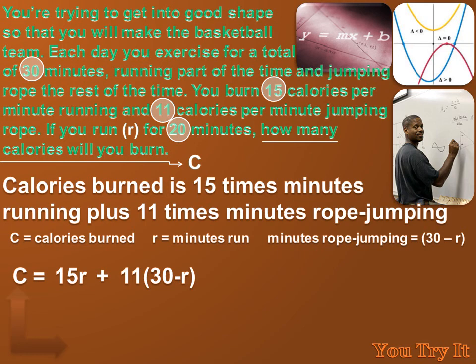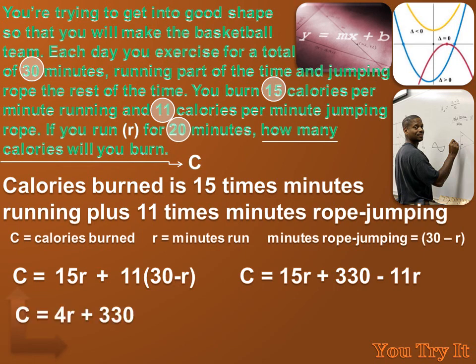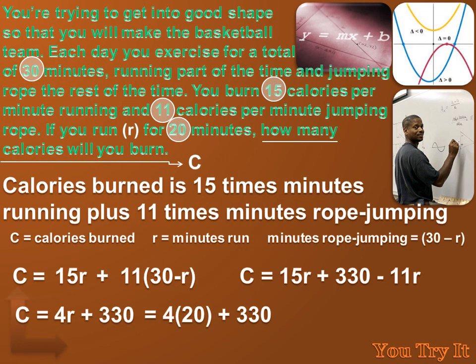We can simplify that expression. C equals 15R plus 11 times 30 minus R. Using the distributive property on 11 times 30 minus R, it becomes C equals 15R plus 330 minus 11R. Combining like terms gives C equals 4R plus 330. Since the problem says you run for 20 minutes, we substitute 20 for R: four times 20 plus 330 equals 80 plus 330, which equals 410 calories.